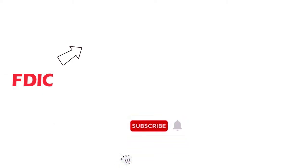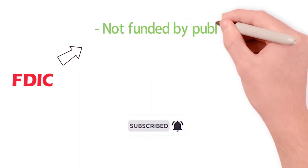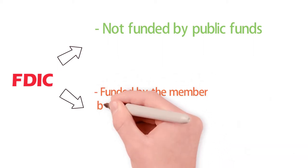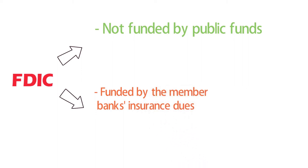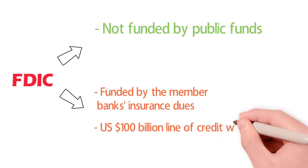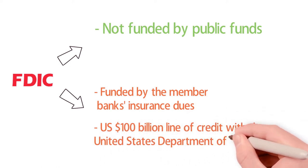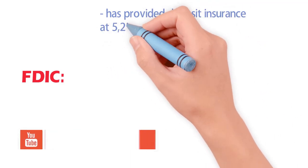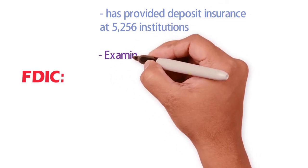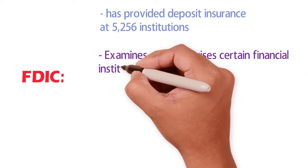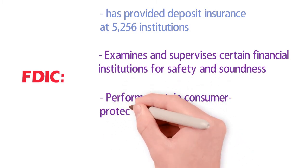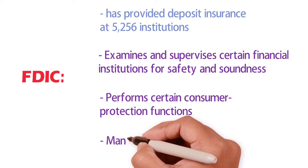The FDIC and its reserves are not funded by public funds — member banks' insurance dues are the FDIC's primary source of funding. The FDIC also has a $100 billion line of credit with the United States Department of Treasury. So far, the FDIC has provided deposit insurance at 5,256 institutions. The FDIC also examines and supervises certain financial institutions for safety and soundness, performs certain consumer protection functions, and manages receiverships of failed banks.